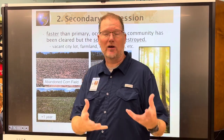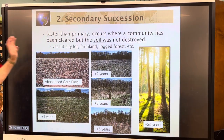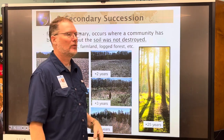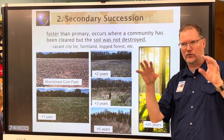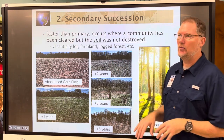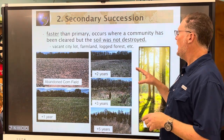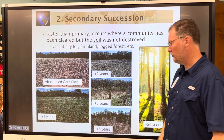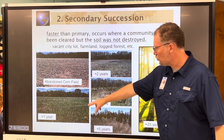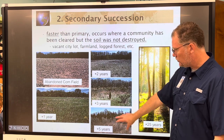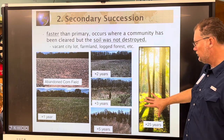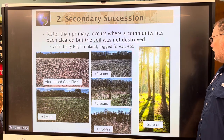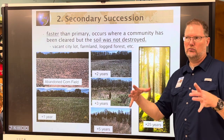Secondary succession is when a community regrows in an area where the soil has NOT been destroyed. Examples include a vacant city lot where a building was removed, or an abandoned cornfield, or a logged forest where new growth returns. Photos of the same abandoned field show succession over one, two, three, and five-plus years — shrubs and small trees appear, and eventually a mature forest develops after about 25 to 30 years.